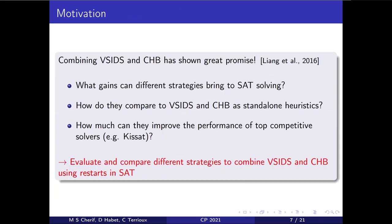We know that combining VSIDS and CHB has shown great promise, as it was used in the MapleCOMSPS solver which won the 2016 SAT competition. But we still don't know what gains different combination strategies can bring to SAT solving, how these strategies compare to VSIDS and CHB as standalone heuristics, or how much they can improve top competitive solvers like KISSAT. Our purpose is therefore to provide an evaluation and comparative study of different strategies to combine VSIDS and CHB using restarts in SAT.